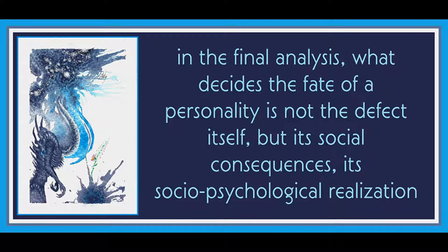It would be a mistake to assume that the process of compensation always ends in success or always leads from the defect to the formation of a new capability. As with every process of overcoming and struggle, compensation may also have two extreme outcomes — victory and failure — and between these two are all possible transitional points. The outcome depends on the relationship between the severity of the defect and the wealth of compensatory reserves. But whatever the anticipated outcome, development complicated by a defect represents a creative physical and psychological process — the creation and recreation of a child's personality based on the restructuring of all the adaptive functions and the formation of new processes, overarching, substituting, equalizing, generated by the handicap and creating new roundabout paths for development.